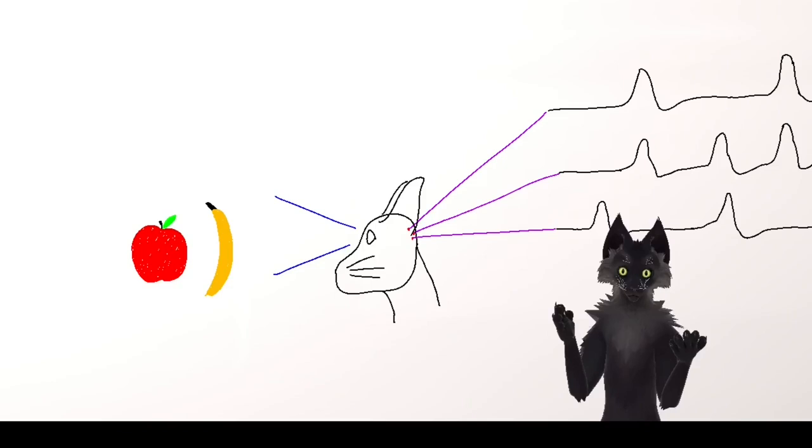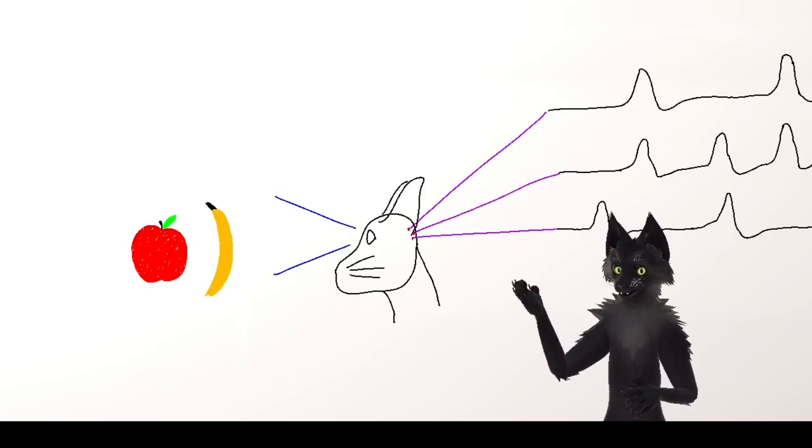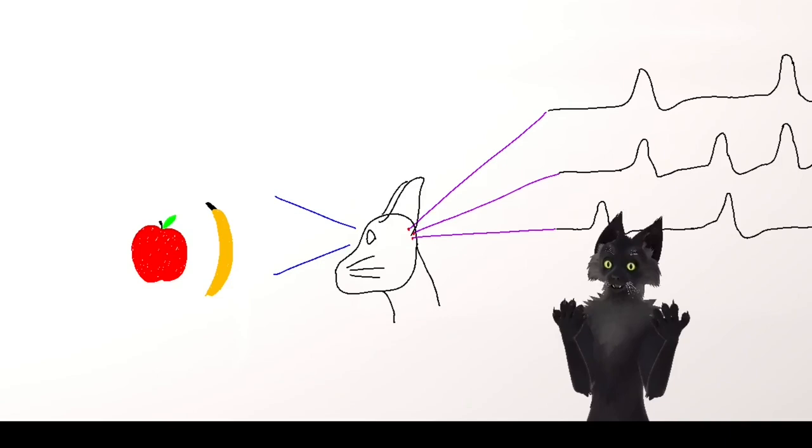So clearly, our naive way of encoding information is wrong. There can't be a one-to-one correspondence between neurons and the objects that they detect. Each object needs to be detected by multiple neurons in case some of them die, and each neuron needs to be able to detect multiple objects, or else you won't have enough brain cells to detect everything that you need to detect.